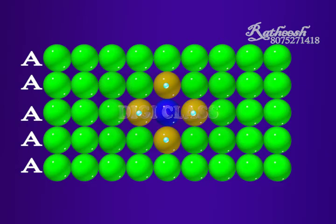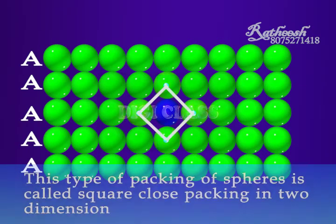If the centers of the four immediate neighboring spheres are joined, a square is formed. Hence, this type of packing of spheres is called square-close packing in two dimensions.